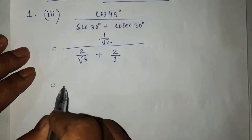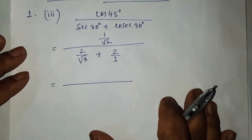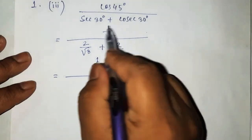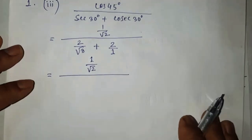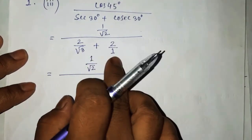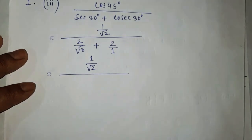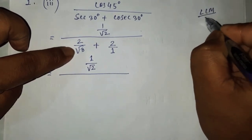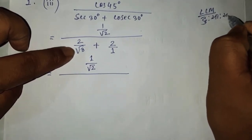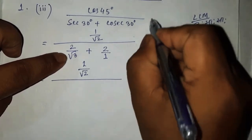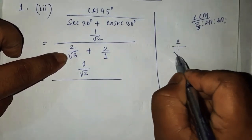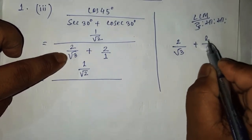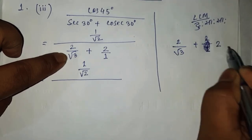Now we will simplify and apply the same thing. The result of the simplification gives us the result. LCM is the same as 2 by 1, so it's only 2 by 1.